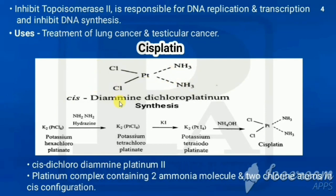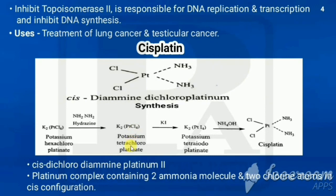Now for the synthesis of cisplatin: the starting material is K2PtCl6, potassium hexachloroplatinum. On treatment with hydrazine, two chlorines are removed to give K2PtCl4, potassium tetrachloroplatinum. We started with six chlorines (hexachloro) and now have four chlorines (tetrachloro).